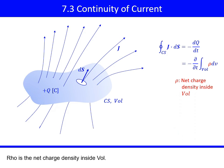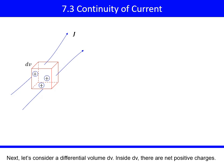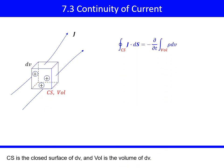Rho is the net charge density inside volume. Next, let's consider a differential volume dV. Inside dV, there are net positive charges. CS is the closed surface of dV, and vol is the volume of dV.